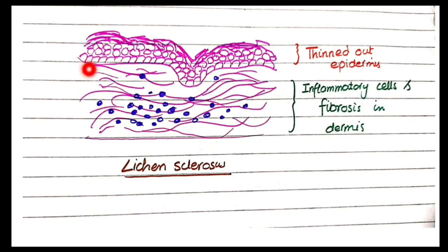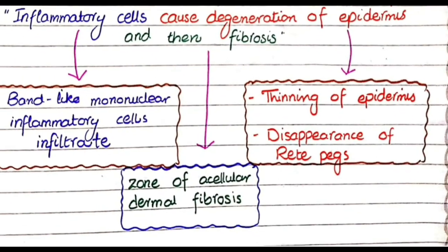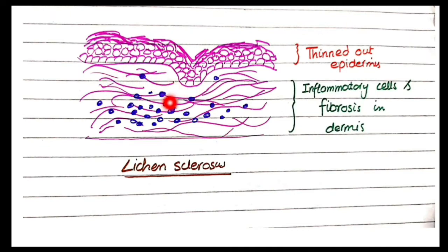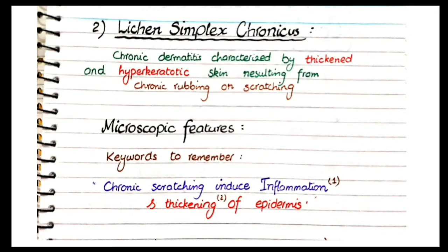The third cardinal feature is a zone of acellular dermal fibrosis — abundant fibrous tissue in which cells of the connective tissue are not visible. To summarize, the three cardinal microscopic features of lichen sclerosis are: band-like mononuclear inflammatory cells infiltrate, thinning of epidermis with disappearance of rete pegs, and a zone of acellular dermal fibrosis.